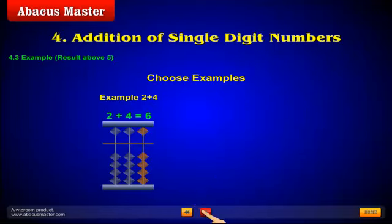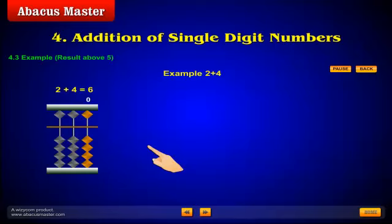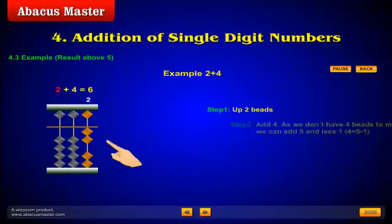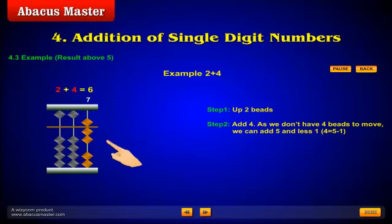A little more harder. 2 plus 4. Step 1. Up 2 beads. Step 2. Add 4. As we don't have 4 beads to move, we can add 5 and less 1. That is, 4 equals 5 minus 1. Step 3. Count the beads. Now, I call that superb video.